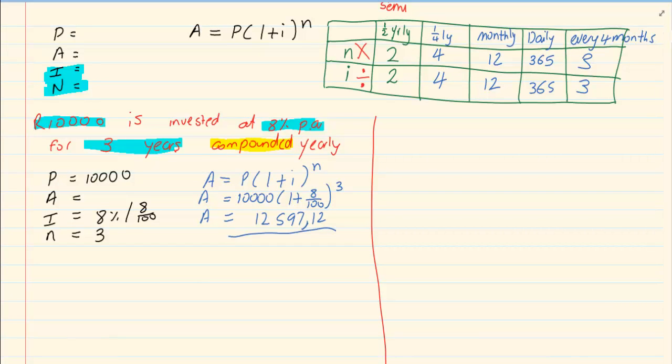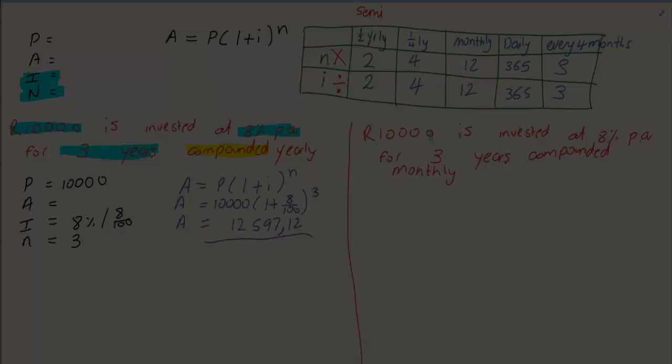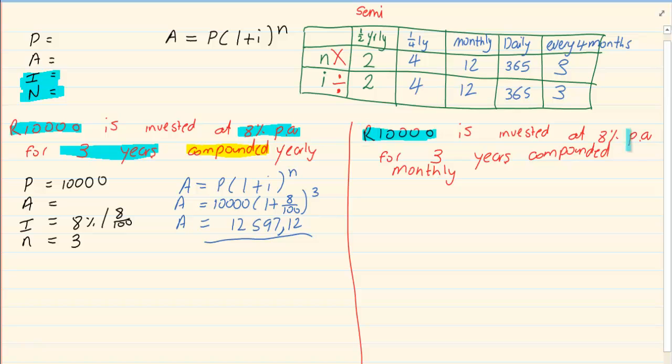Now let us change the question slightly. 10,000 Rand is invested at 8% per annum. Now when they say PA it means the bank is giving you a rate of 8% for a year. You are investing it for 3 years. But it is compounded monthly.